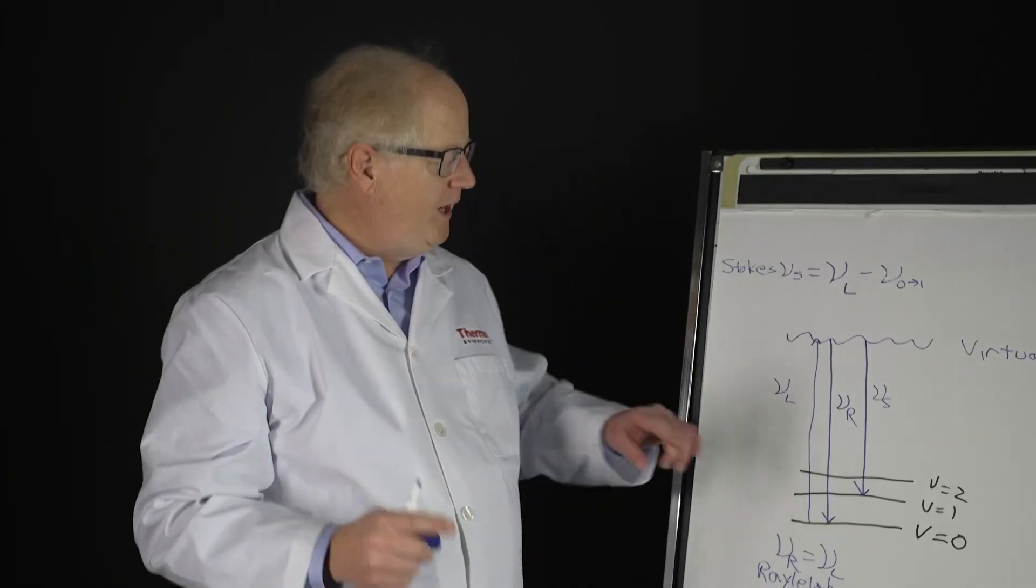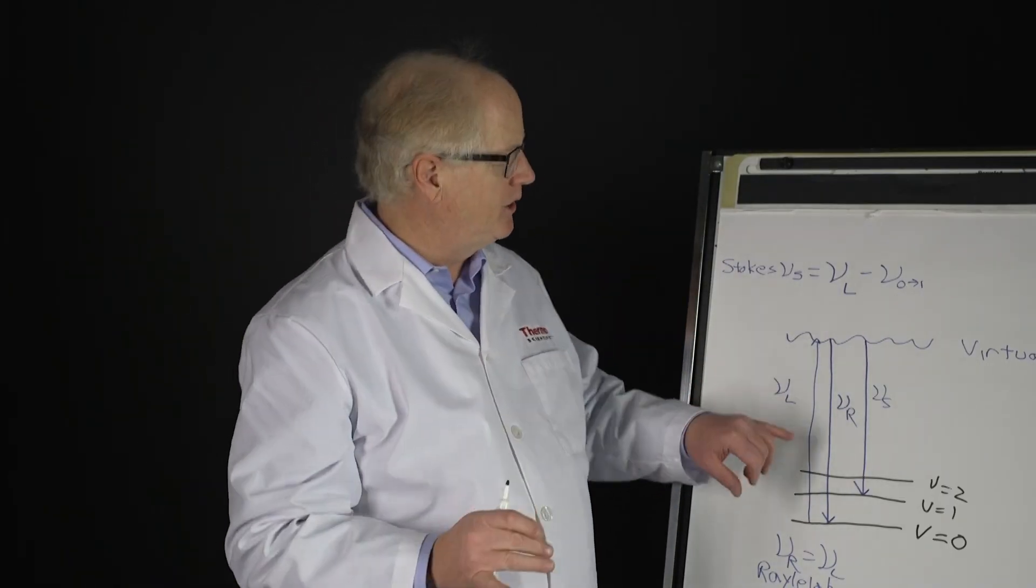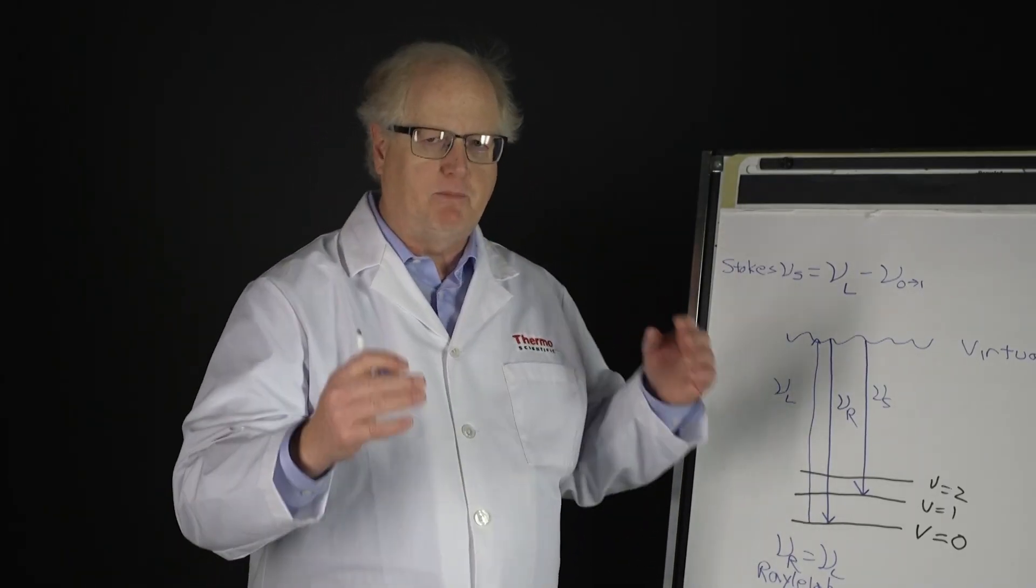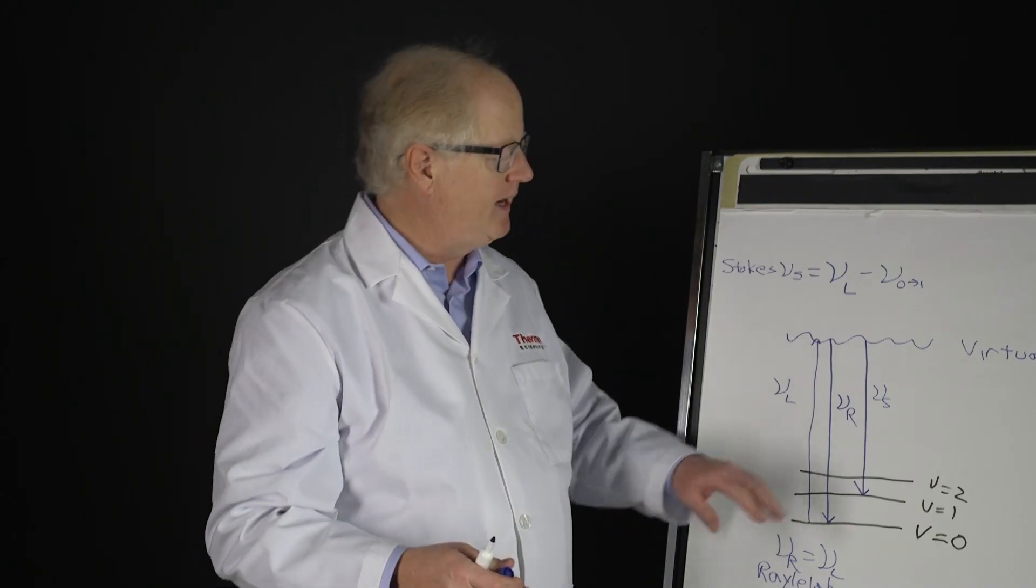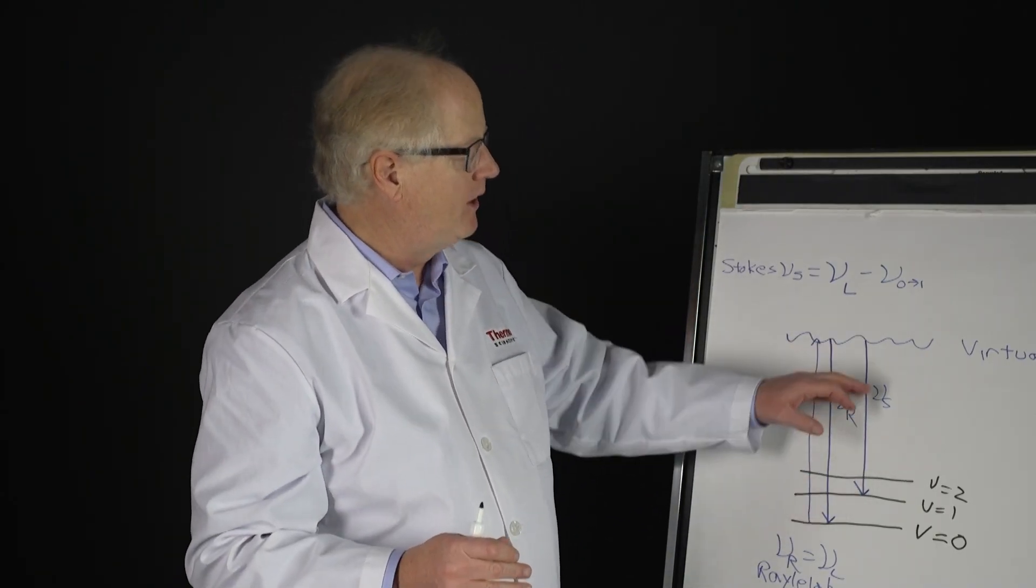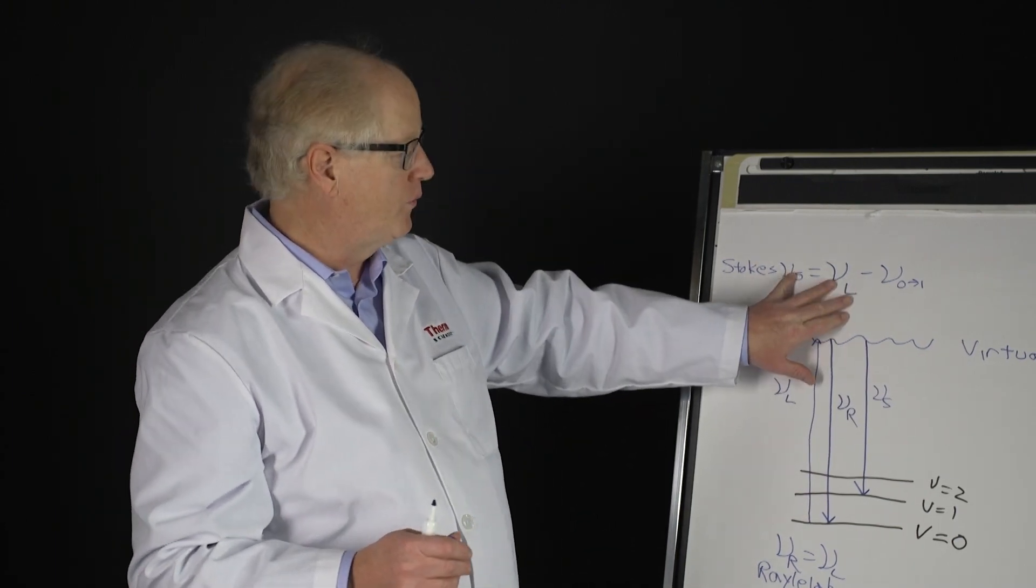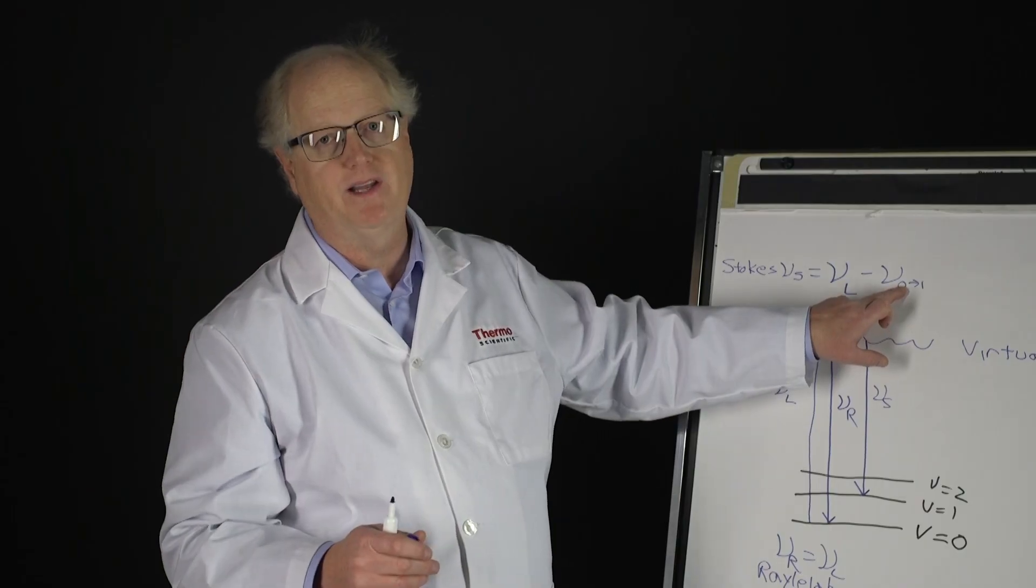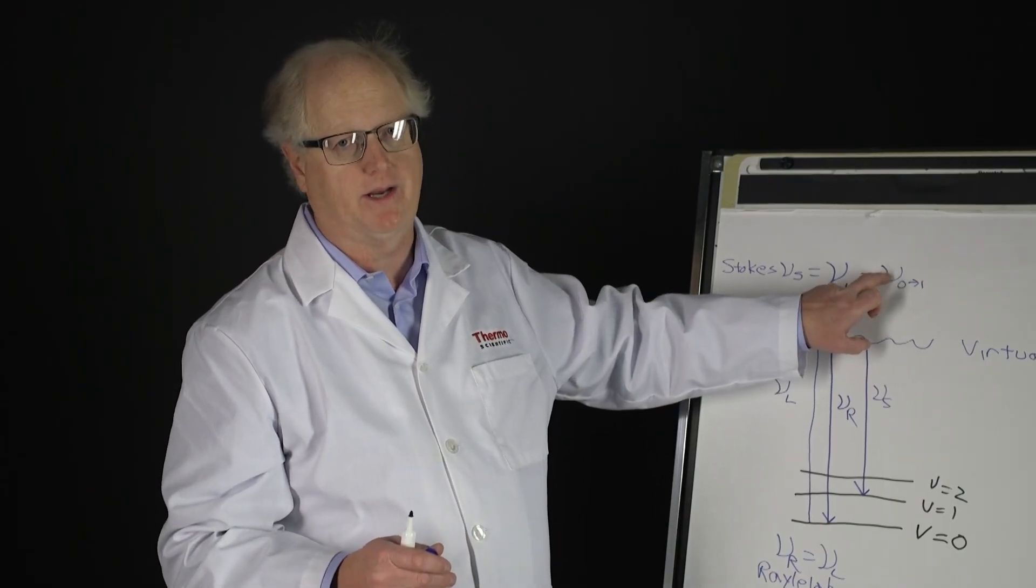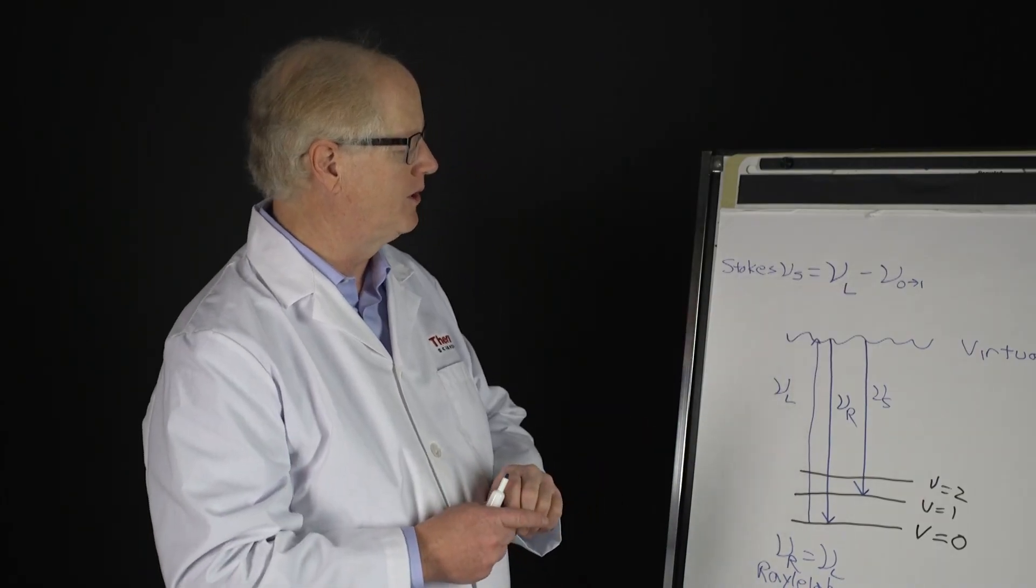What we do though—we know νL, that's the laser, that's our source, that's the energy we put in. The spectrometer, as we'll see in a later video, measures νS. It measures this scattered or Stokes photon. So we know these two, so if we solve this equation, we can find this energy, and that's what we're interested in. This is the energy of the molecule and this is what the Raman is looking at.